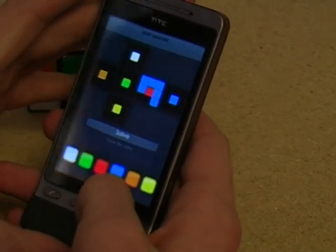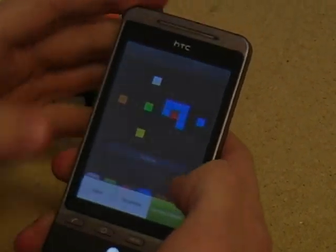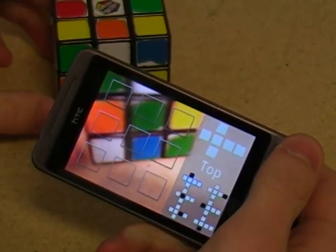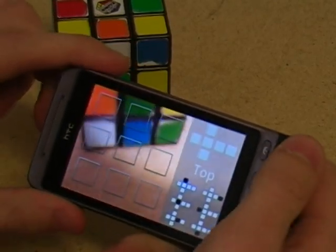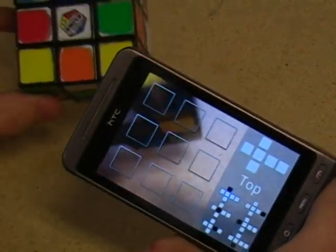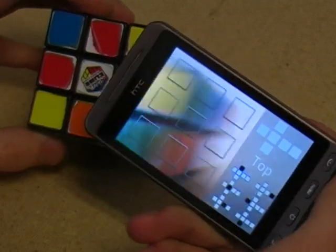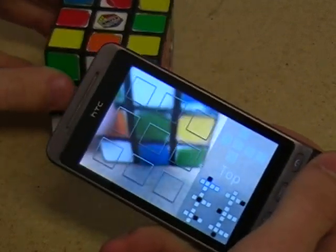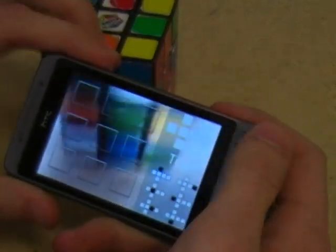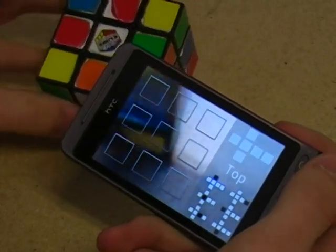And then we have this camera mode right here, let me show you. Where you can photograph your cube through the camera on the telephone and basically just solve it. So I'm going to show you how to do this.